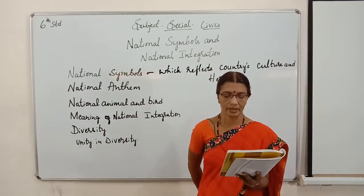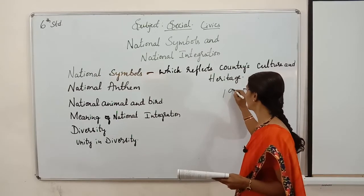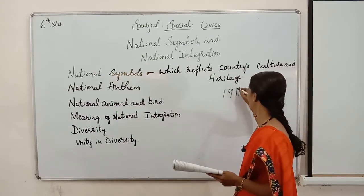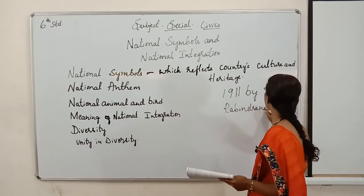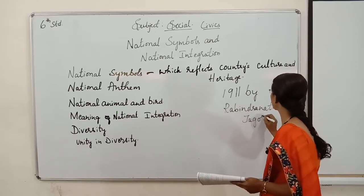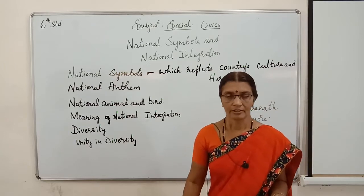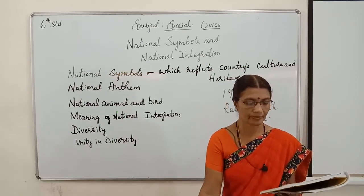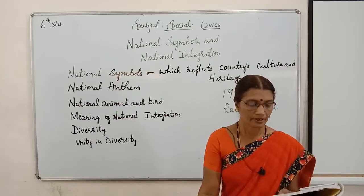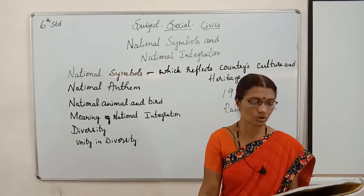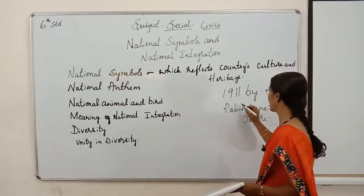Jana Gana Mana is our National Anthem. It was written in 1911 by Rabindranath Tagore. It was written in the Bengali language. This song has 5 stanzas in total. The first stanza was adopted as our National Anthem by the Constituent Assembly on 24th January 1950.